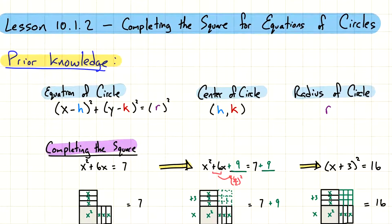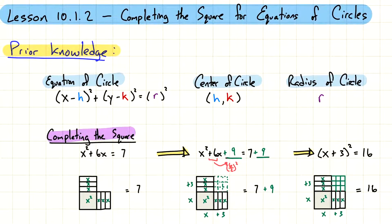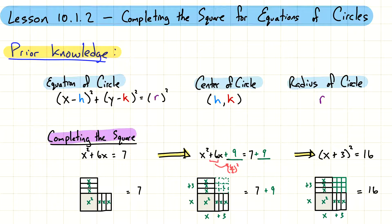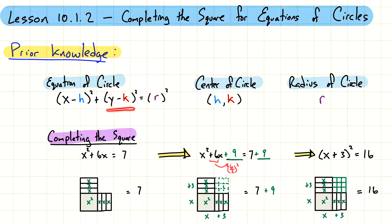So here are a couple things you need to know going into this. Last lesson we talked about the equation of a circle — this is the graphing form. This comes from the Pythagorean Theorem where x minus h represents how the circle is shifting horizontally, and y minus k tells us whether it's shifting up or down. The values of h and k tell us exactly where the center of the circle is, and r squared represents the radius squared.